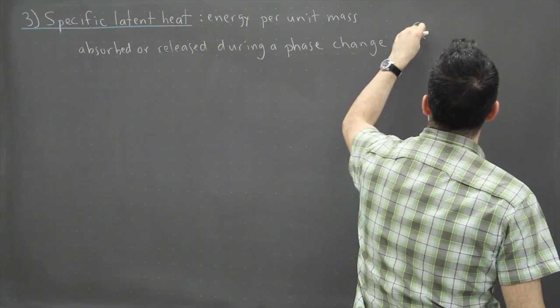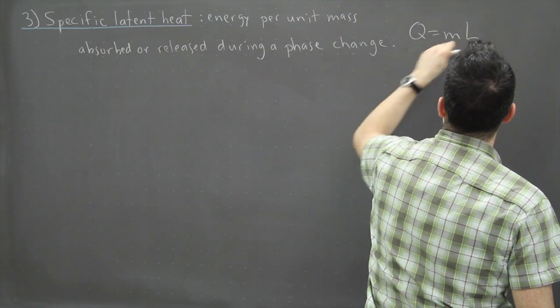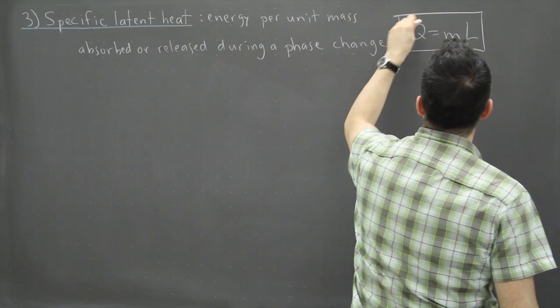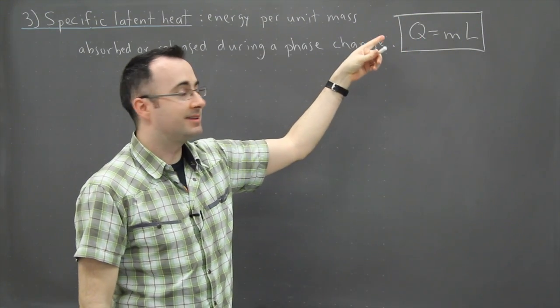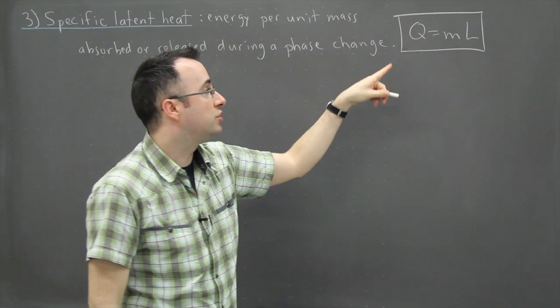It goes like this: Q equals ML. This is in your data booklet so Q is still related to heat, so this is going to be measured in joules.